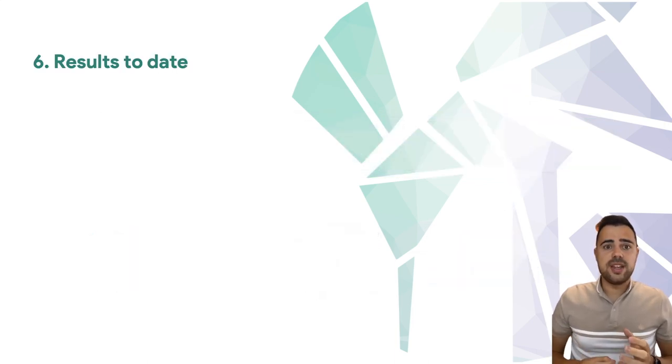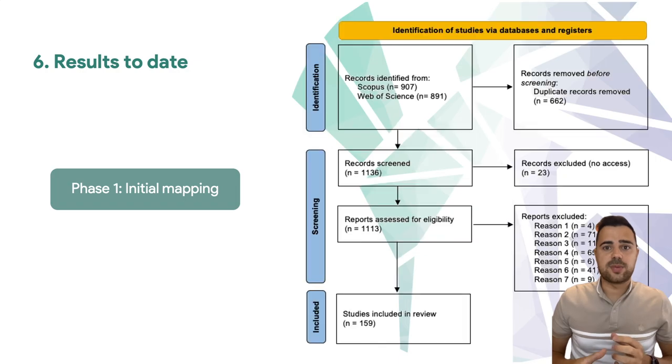Among the results achieved to date, the mapping results stand out in the first place. A mapping carried out in Web of Science and Scopus yielded a total of 156 results, which underwent a screening process, resulting in a total of 59 studies.